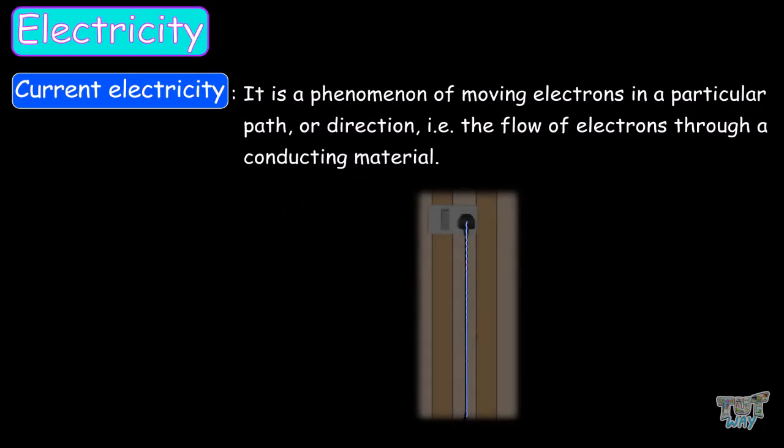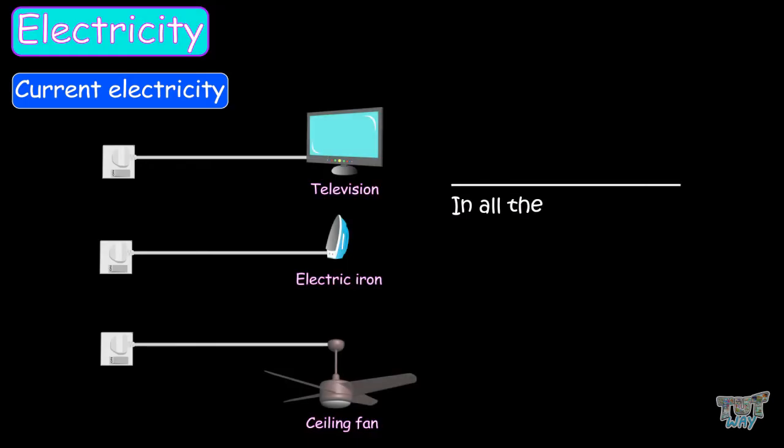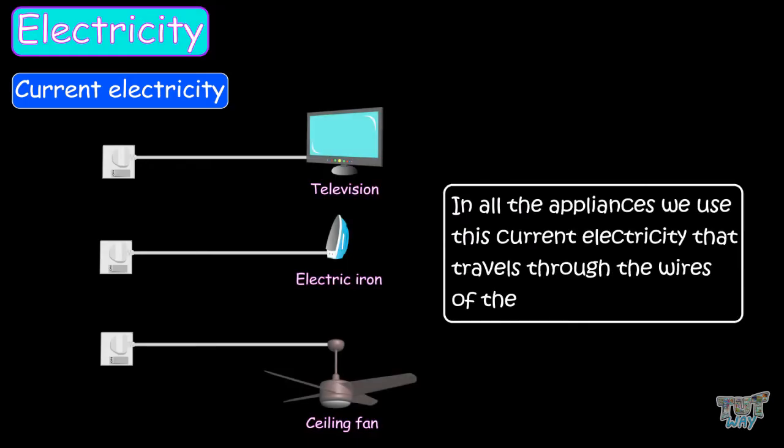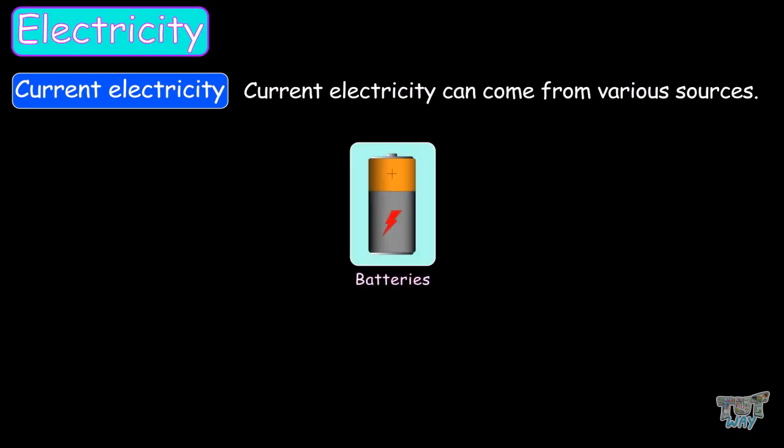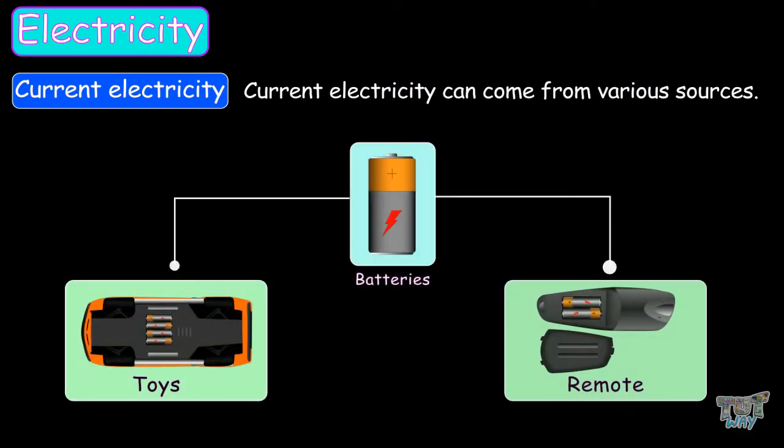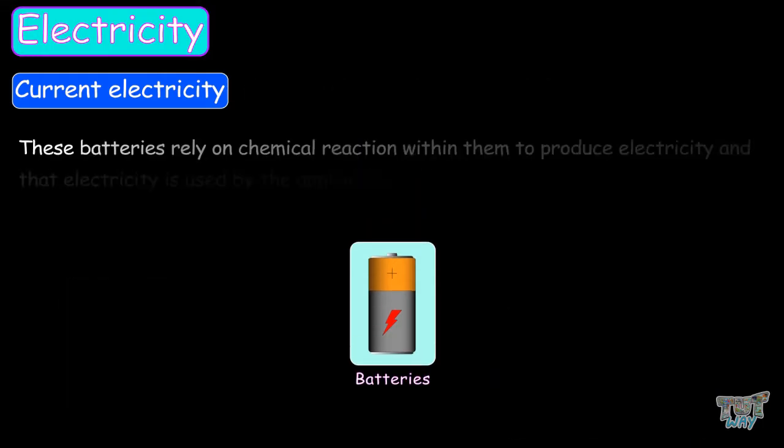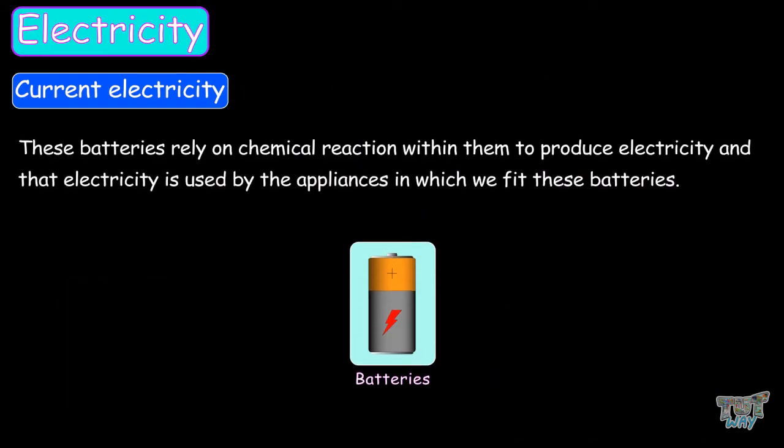Like a wire, and in all the other appliances we use, this current of electricity travels through the wires. Current electricity can come from various sources, and the most commonly used are batteries that you can see and use in your toys, remotes, and so on. These batteries rely on chemical reactions within them to produce electricity, and that electricity is used by appliances into which we fit these batteries.